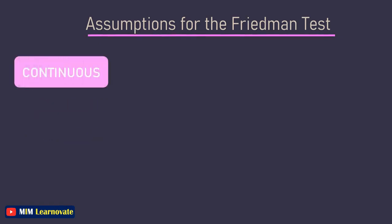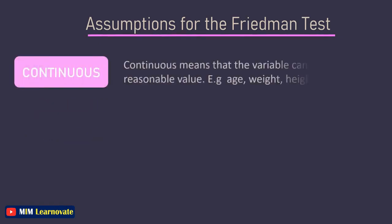The variable must be continuous. Continuous means that the variable can take on any reasonable value. Some good examples of continuous variables include age, weight, height, test scores, service scores, and yearly salary.